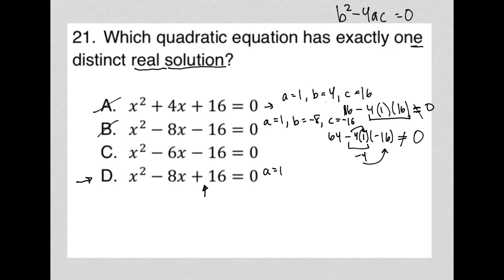Where a is 1, b is -8, and c is positive 16. Here, b² would be 64 minus 4 times a times 16, which is c, and here we would have 64 minus 64, which does equal zero.